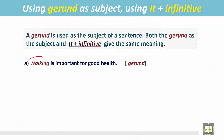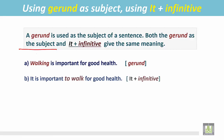In this sentence, the ing form of the verb walk is 'walking,' and here it acts like the subject. See the second example: It is important to walk for good health. The sentence begins with 'it' and there is an infinitive here — to walk.